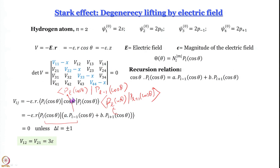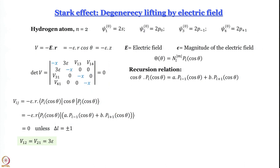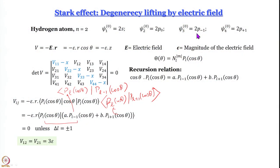I leave it to you to work out and prove that V₁₂ = V₂₁ = 3ε (where ε is the magnitude of the electric field). For V₂₃, V₂₄, V₄₃, V₄₂, V₃₂, ΔL = 0, so all these are zero.